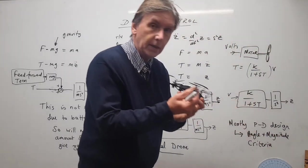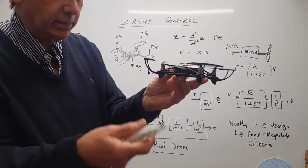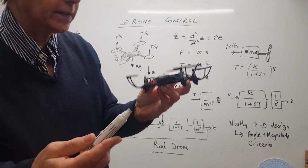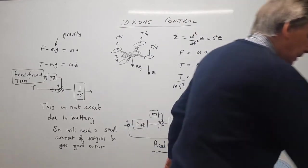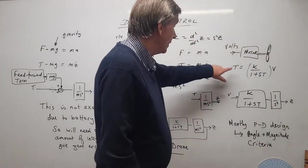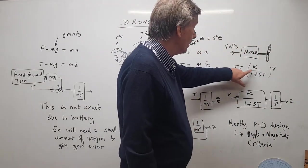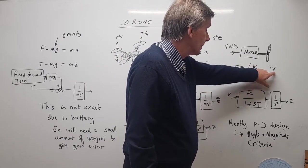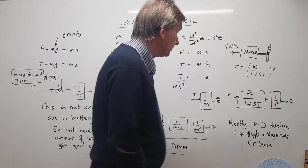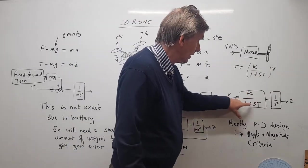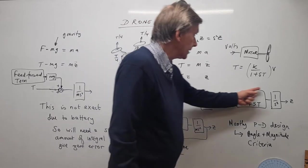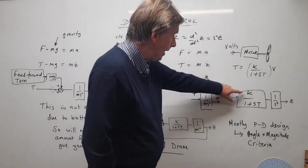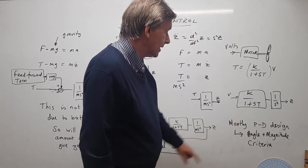The motors are quite powerful little things — if you put your finger in there, it does hurt. The thrust can be modeled by a first-order lag: k/(1 + sT) times the voltage applied to the motor. We add that in as a front end to our transfer function, giving the overall transfer function we will work with. We need to choose k and T.